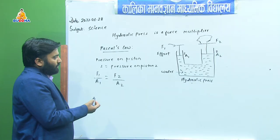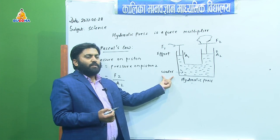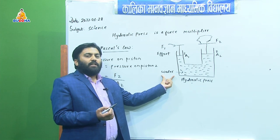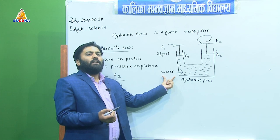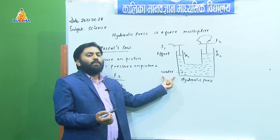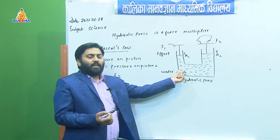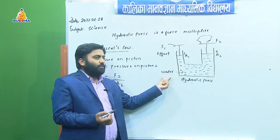The liquid is used inside the hydraulic press. Why liquid and not gas? Liquid is used because liquid is incompressible and it transmits pressure equally in all directions. If we use gas, the gas is compressible — we can compress its volume — so gas is not used here.